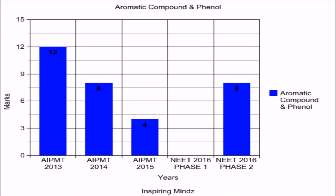Aromatic Compounds and Phenol is another chapter with similar weightage and importance. In AIPMT 2013 the weightage was 12 marks, which reduced to 8 marks in AIPMT 2014, and further reduced to 4 marks in AIPMT 2015. In NEET 2016 phase 1 no questions were asked, but there was an increase in NEET 2016 phase 2 with questions worth 8 marks.